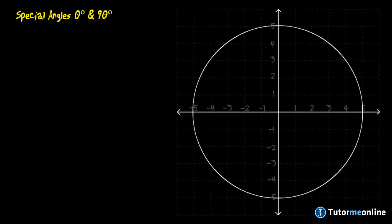Previously in trigonometry we've defined three special angles, namely the 30 degree, the 45 degree, and the 60 degree angles. Now when using the Cartesian plane we can define two more special angles, namely 0 degrees and 90 degrees.